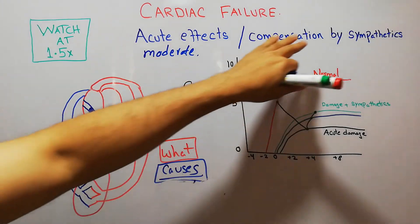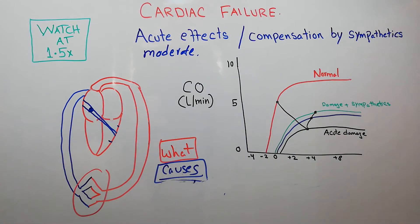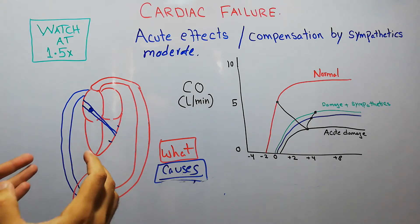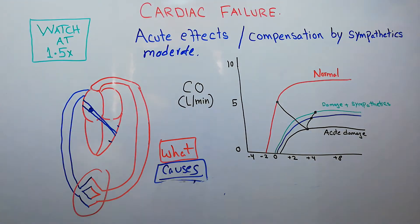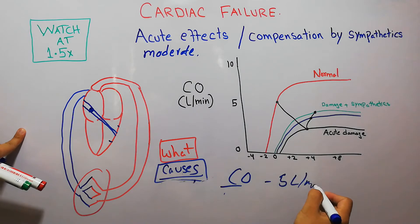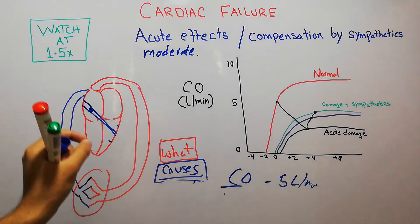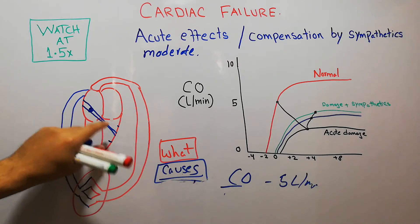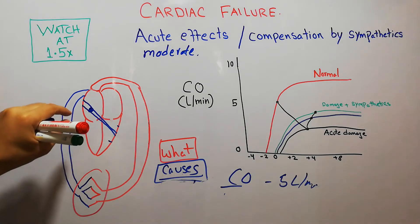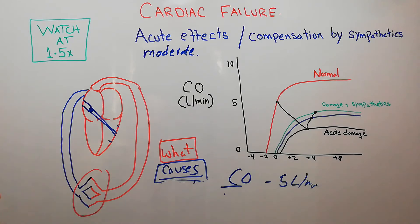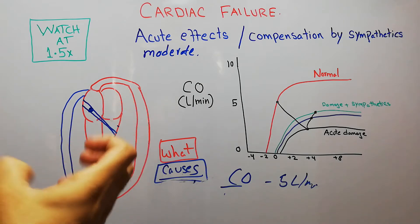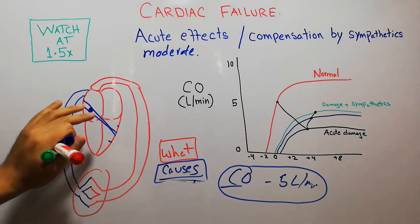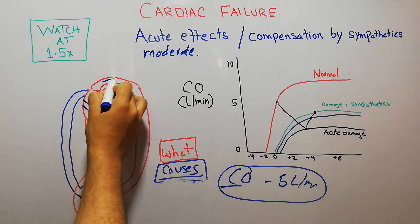We will see how moderate failure is compensated by the sympathetic nervous system. The most important acute effect of heart failure is a decrease in cardiac output — the amount of blood the heart pumps every minute, normally five liters per minute. When acute failure occurs, most often due to sudden decrease in blood flow from myocardial infarction or heart attack, there is decreased force of contraction and cardiac output falls below the normal level.